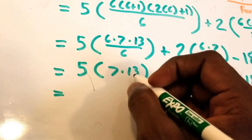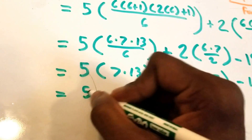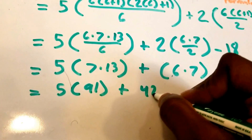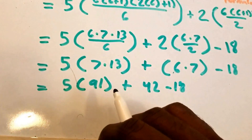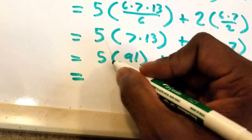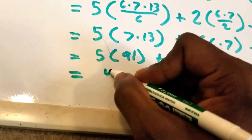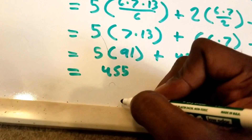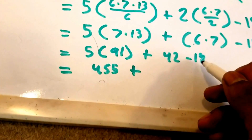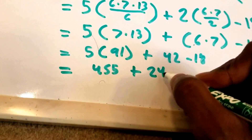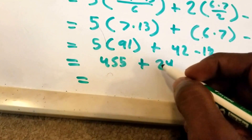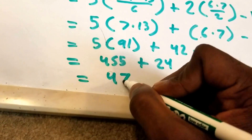7 times 13 is 91, so we get 5 times 91, plus 6 times 7 is 42, minus 18. 5 times 91 is 455, and 42 minus 18 is 24. So we have 455 plus 24, which equals 479. And that's our answer.